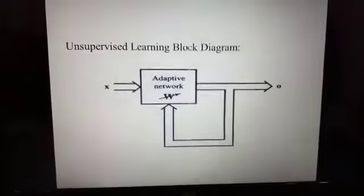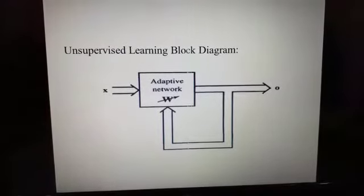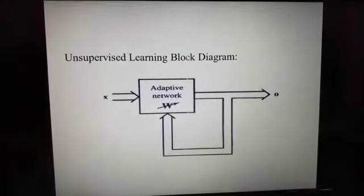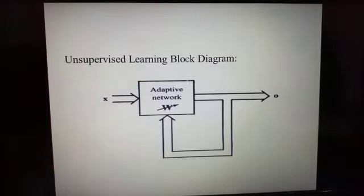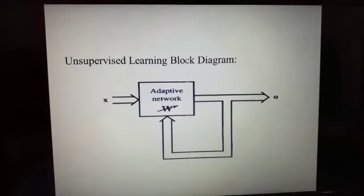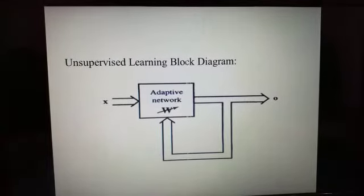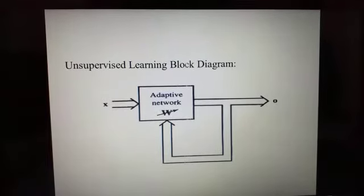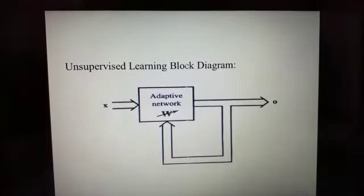This is the simple block diagram for unsupervised learning. In artificial neural networks following unsupervised learning, input vectors of similar type are grouped without the use of training data to specify how a member of each group looks or to which group a member belongs.